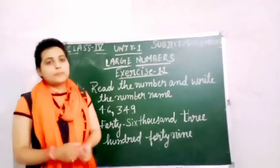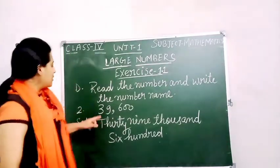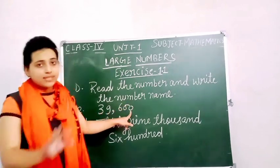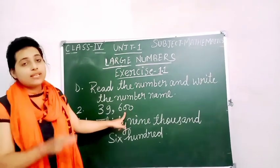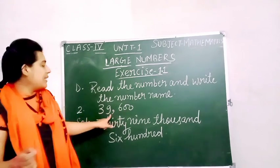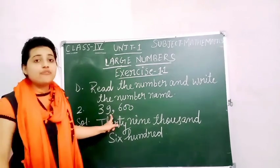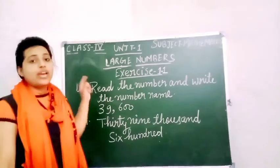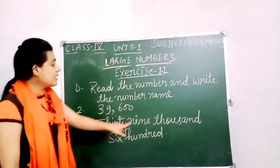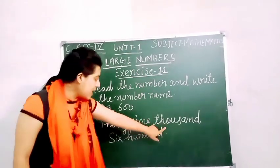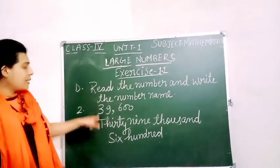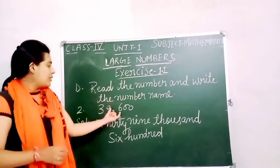The next question is 39,600. In the 1's place there is no number, in the 10's place there is no number, in the 100's place we have 6, in the 1000's place we have 9, and in the 10,000's place we have 3. So the number name of this number is thirty-nine thousand six hundred.